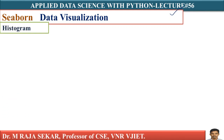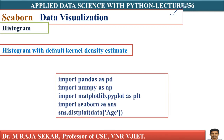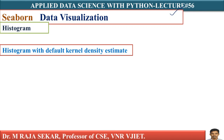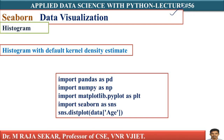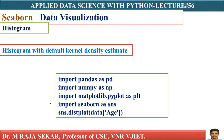We will plot a histogram with default kernel density estimate, because using the Seaborn library, by default it gives you a histogram with the kernel density estimate. The function used to construct the histogram is distplot — distribution plot. Since it is from the Seaborn library, we use sns, which is the alias for Seaborn, so we write sns.distplot.